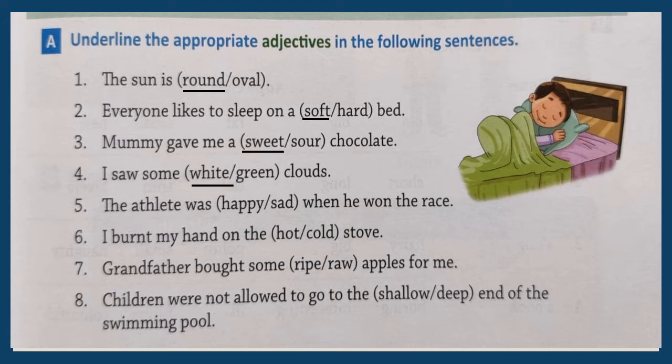Number five: The athlete was happy or sad when he won the race. An athlete is a person who is very good at sports, activities or exercises. If you won something, will you be happy or sad? Yes, you will be happy, so let's underline happy. Number six: I burnt my hand on the hot or cold stove. Do you burn yourself when you touch something cold? No. So the adjective here is hot.